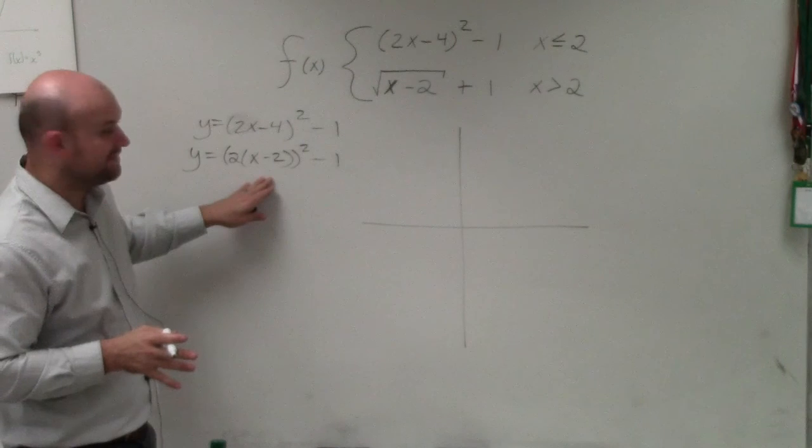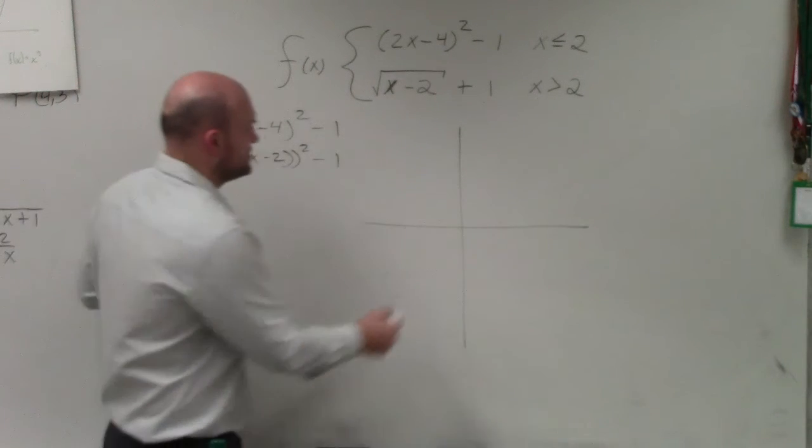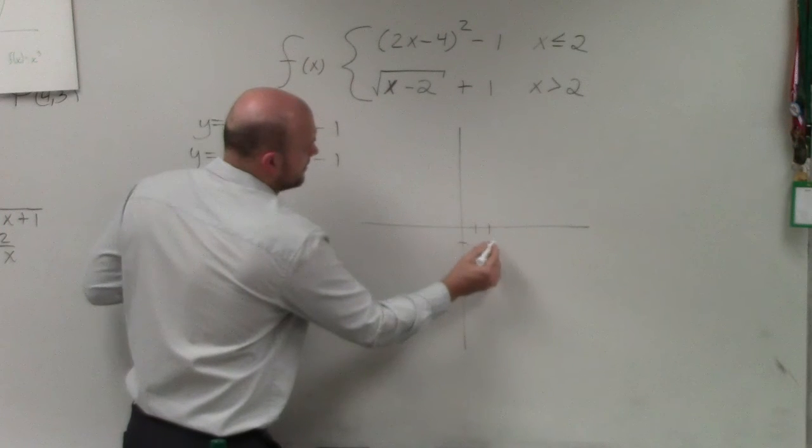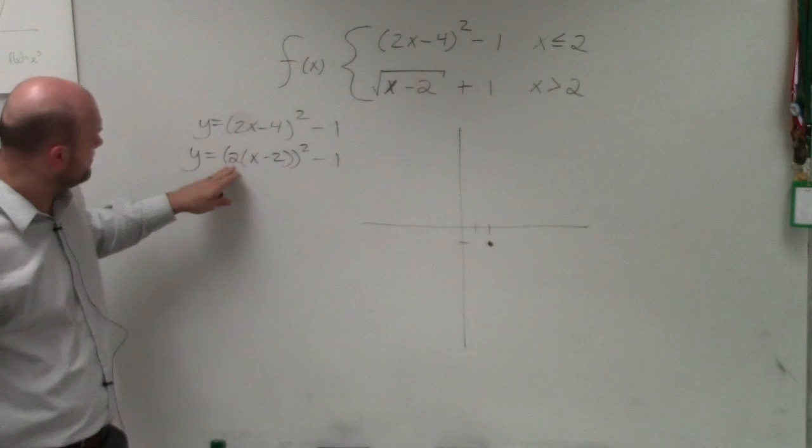So now, when I go ahead and graph this, my vertex is now changed to over 2, down 1. And then, please note that that horizontal,